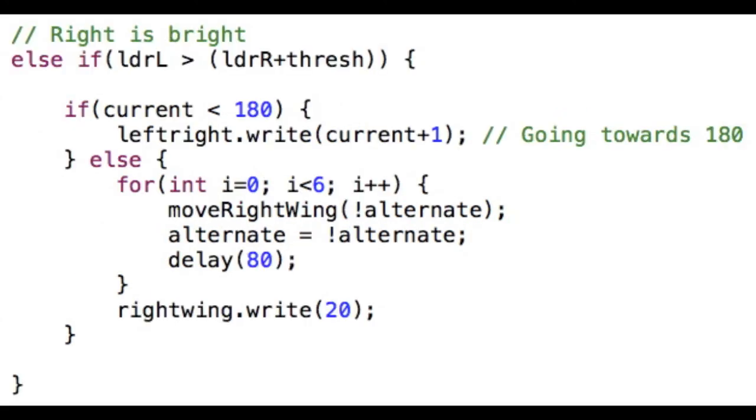For the second case, the light being shone on the right LDR, we want RoboBird to move to its right. In this case, right is at 180 degrees, so we iterate to there. If we reach 180 degrees, then RoboBird waves its wing.